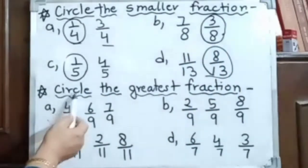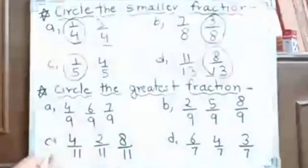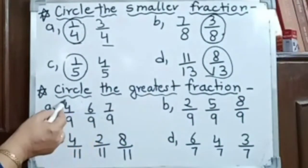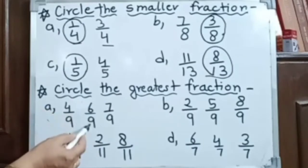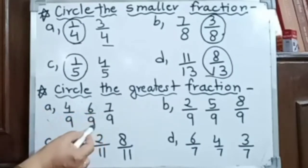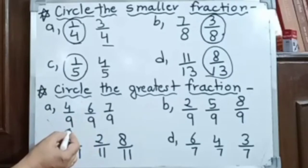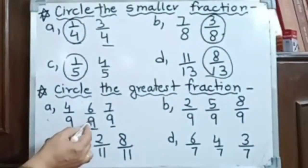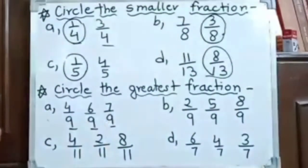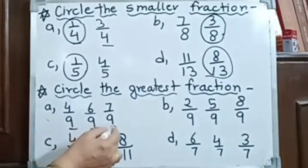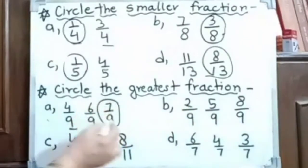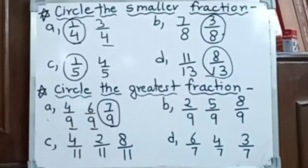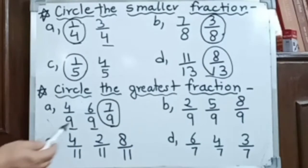Now here we have to circle the greatest fraction. We have 4 by 9, 6 by 9, and 7 by 9. Here we have 9 as the denominator for all. So the greater numerator is the greater fraction. Comparing 4, 6, and 7 — 7 is the greater numerator, so 7 by 9 is the greater fraction.